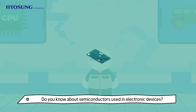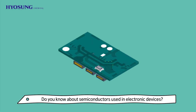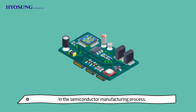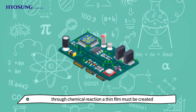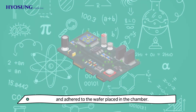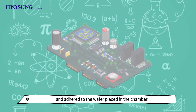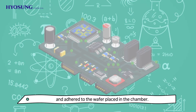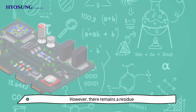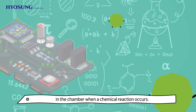Do you know about semiconductors used in electronic devices? In the semiconductor manufacturing process, through chemical reaction, a thin film must be created and adhered to the wafer placed in the chamber. However, there remains a residue in the chamber when a chemical reaction occurs.